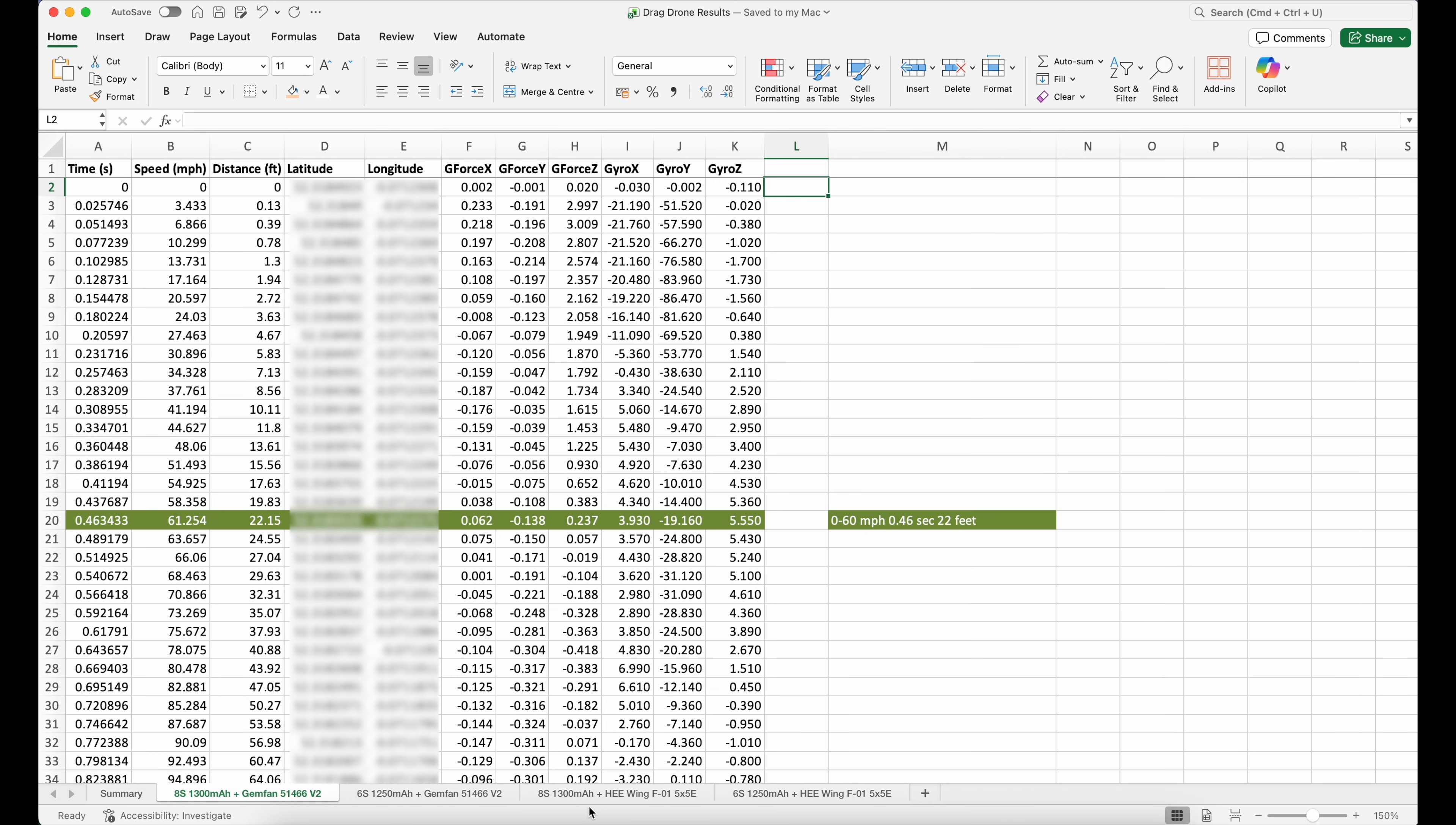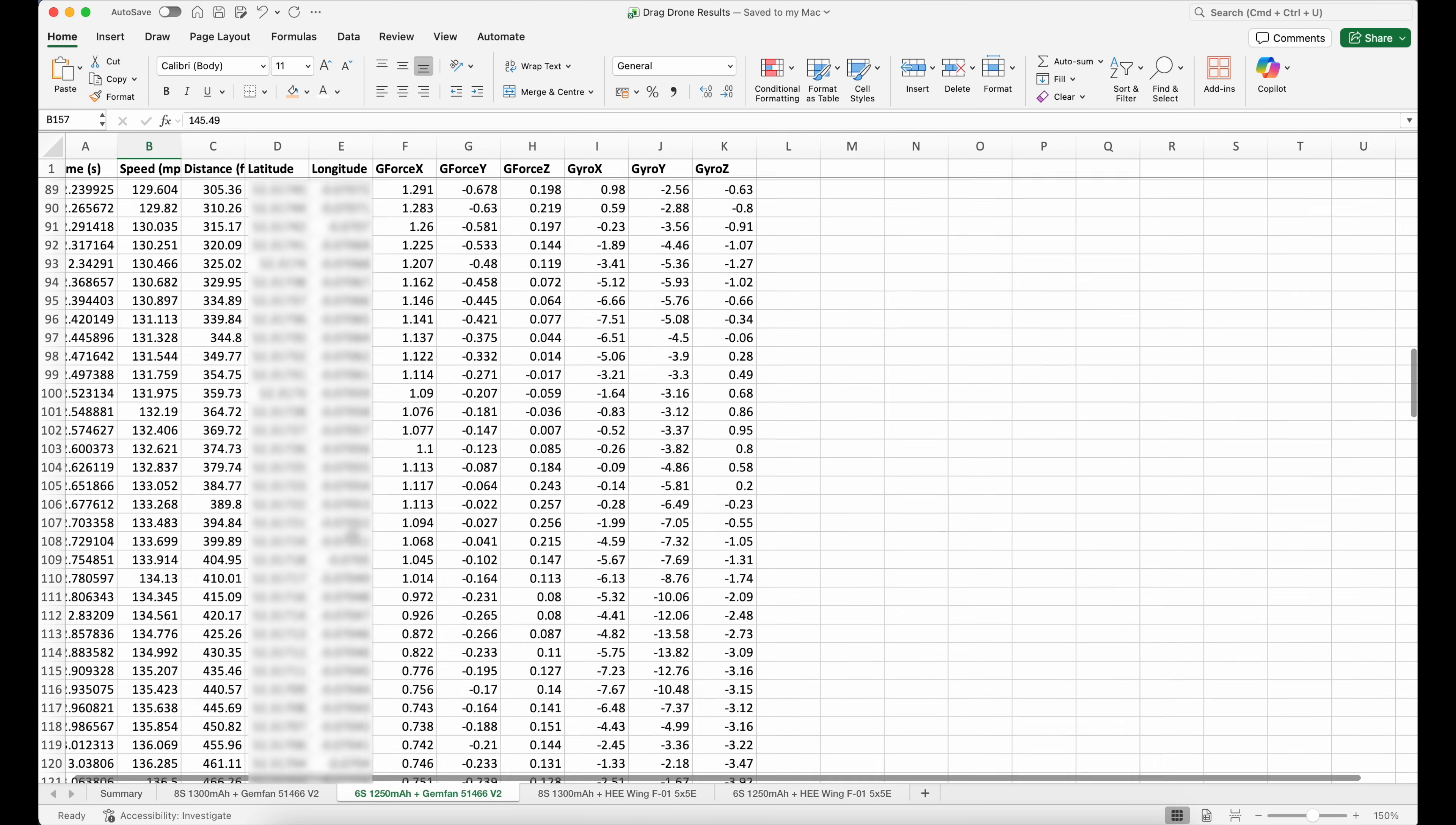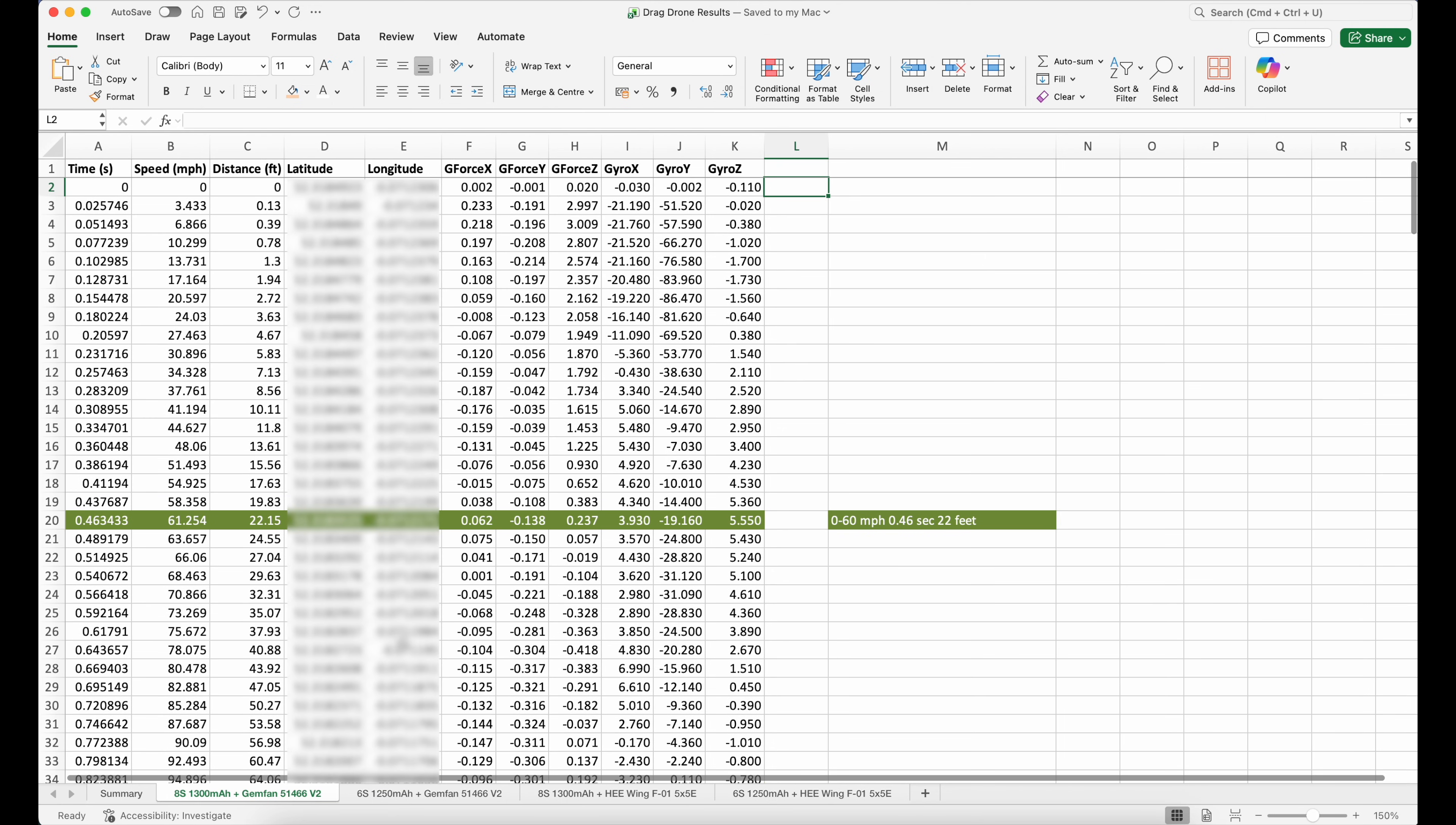So for example this one here is with the 6S 1250 milliamp with the Gemfan 51466 V2 props and similarly for the bi blade with 8S and 6S. I will go through the best one just to show you the values but I have summarized them over here.